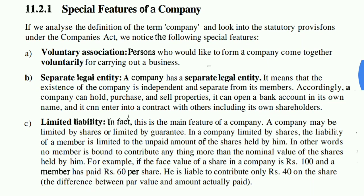Now let's talk about the special features of a company. The first point is Voluntary Association of Persons — a company is an artificial person, and people who would like to form a company come together voluntarily for carrying out a business. The second feature is Separate Legal Entity — the company is not the same as its owners.